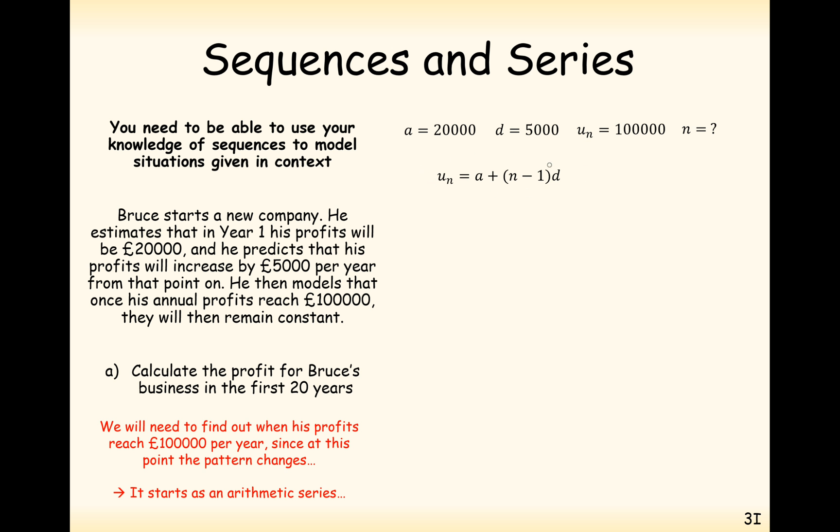Remember the formula for the nth term of an arithmetic series looks like this. So let's substitute it in, and we don't know what n is. So after 17 years, Bruce will have got to the £100,000 mark, and his profits will therefore be £100,000 from there onwards.